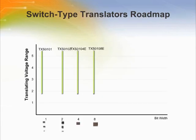TI has four devices in its switch type translation portfolio. The X-axis shows the bit width while the Y-axis shows the translating voltage range. For example, the TXS0102 is a two-channel device that can translate anywhere from 1.2V to 5.5V. The TXS0104E and TXS0108E have IEC level 4 integrated ESD protection on the B ports, which permits these devices to interface with the external world without the addition of discrete ESD devices.